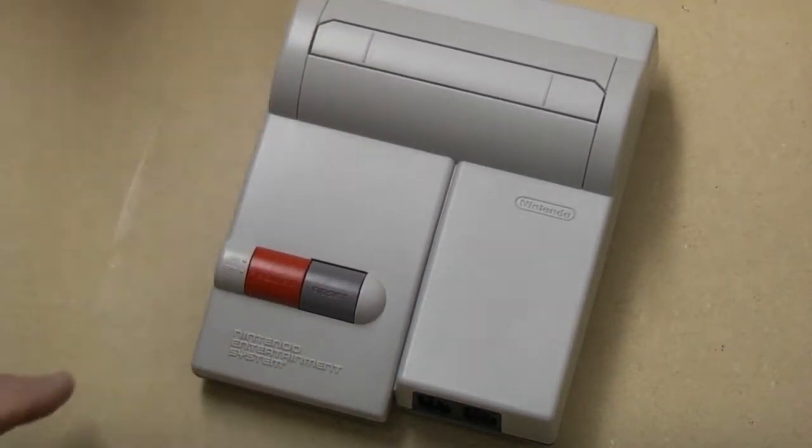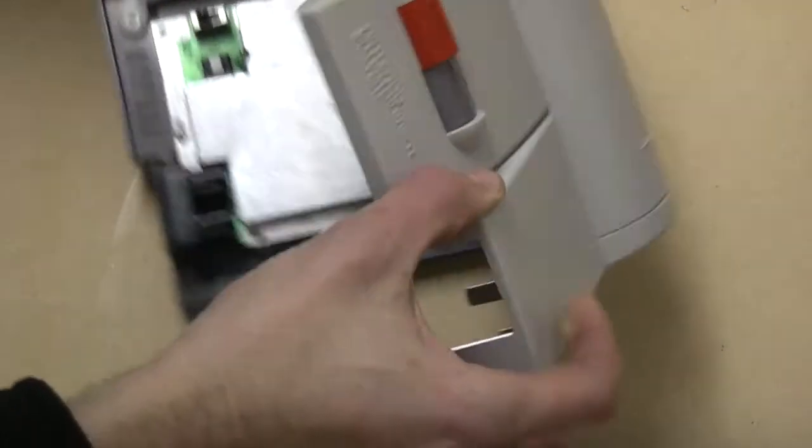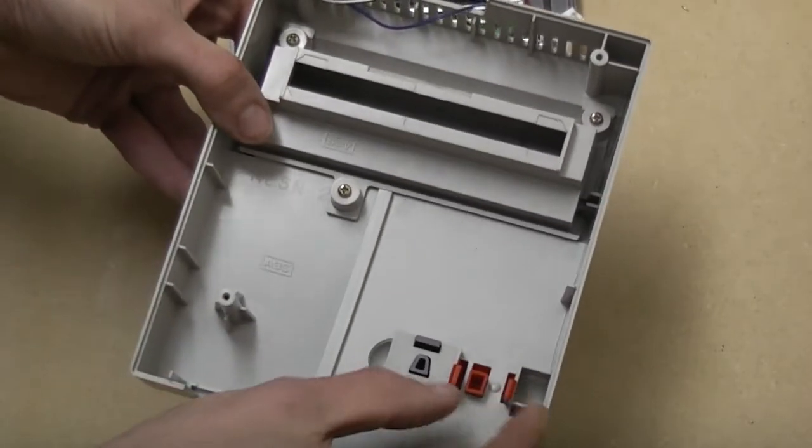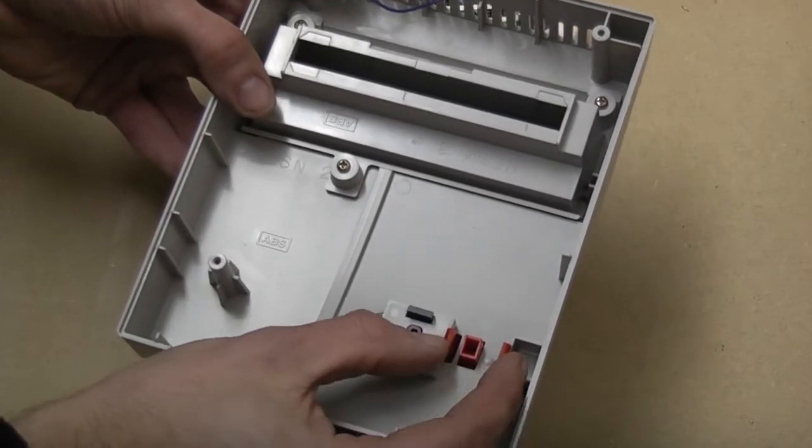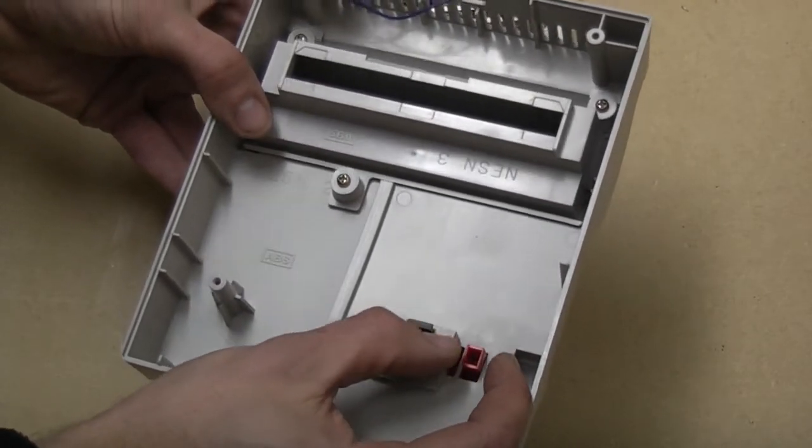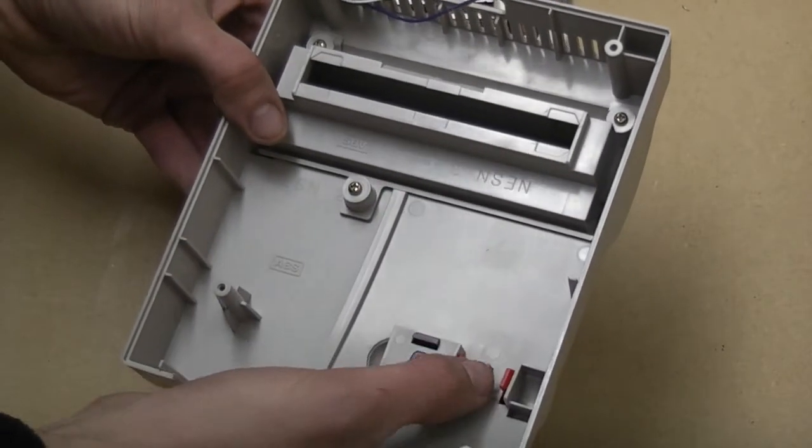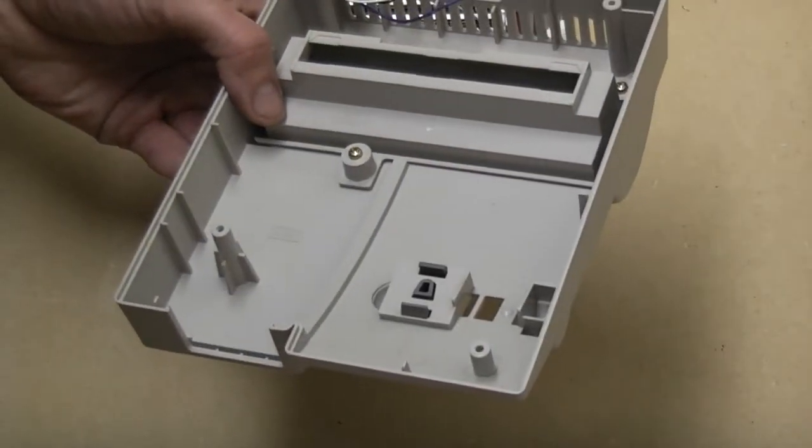So pop the screws out of your NES and get the lid off. Looking at the back side of the NES, there's these two little tabs in here. Basically just give those a press inwards just very gently like that and then you can actually pop the power switch out.